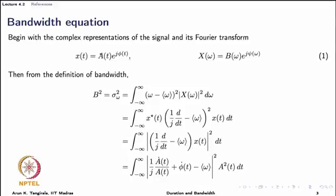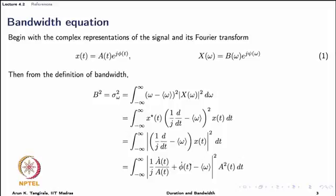We now substitute x(t) = a(t)e^{jφ(t)}. Applying the chain rule, the derivative of x(t) has two terms: the first is ȧ(t)e^{jφ(t)}, and the second is a(t)φ̇(t)e^{jφ(t)}. What has been done here is that a(t) has been taken out of the expression within the modulus and the expression is rewritten accordingly. The algebra is otherwise fairly straightforward.